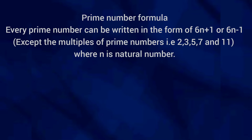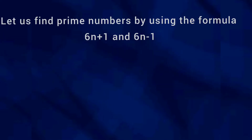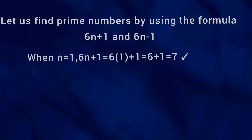Conversely, by the formula 6n + 1 and 6n − 1, we can get the prime numbers for n natural numbers, provided we exclude the multiples of prime numbers 2, 3, 5, 7, and 11. Let us find the prime numbers using these formulas.